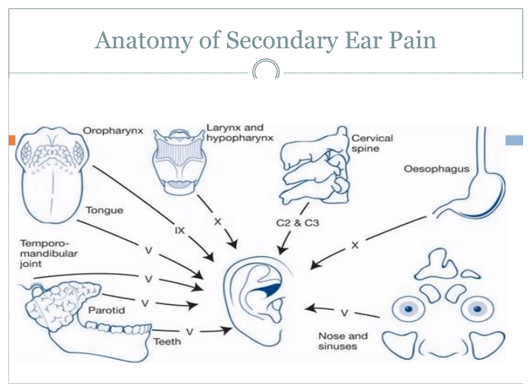The differential diagnosis of secondary ear pain is enormous — things you probably wouldn't even think about. In particular we have cranial nerve 5 (the trigeminal), cranial nerve 7 (the facial), cranial nerve 9 (glossopharyngeal), and cranial nerve 10 (vagus). We also have neural networks from the cervical plexus of C2 and C3 that also innervate the ear itself.